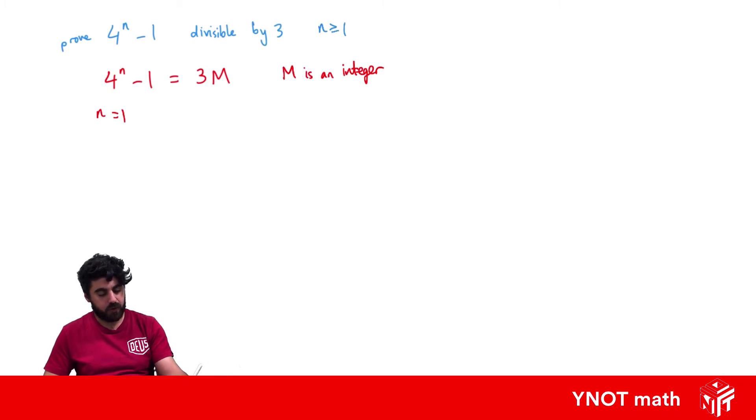So when n equals 1, we have 4 to the power of 1 minus 1, and 4 to the power of 1 is just 4. And 4 minus 1 is 3. And 3 is clearly divisible by 3. And in this case, you'd have your M equaling 1.